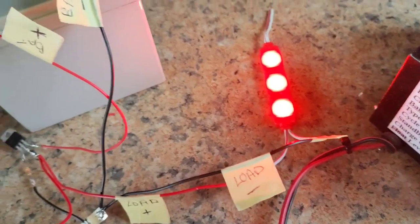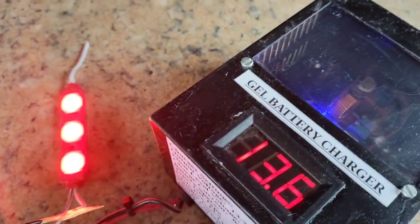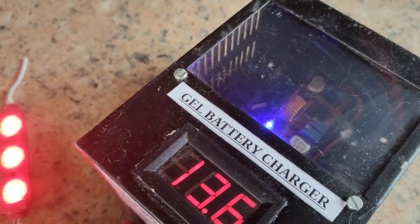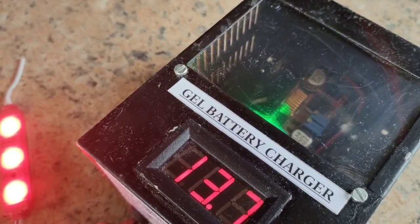The load is still on, the battery is there, and it's also on mains. Once the load is disconnected, it switches to green.